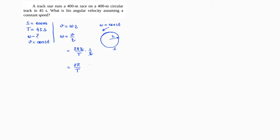So 2π is approximately 6.28, divided by T which is 45 seconds. Dividing these quantities we get 6.28 divided by 45, which equals approximately 0.14 radians per second.